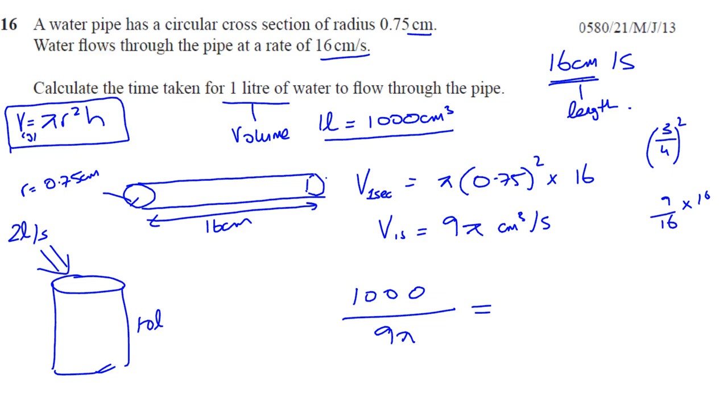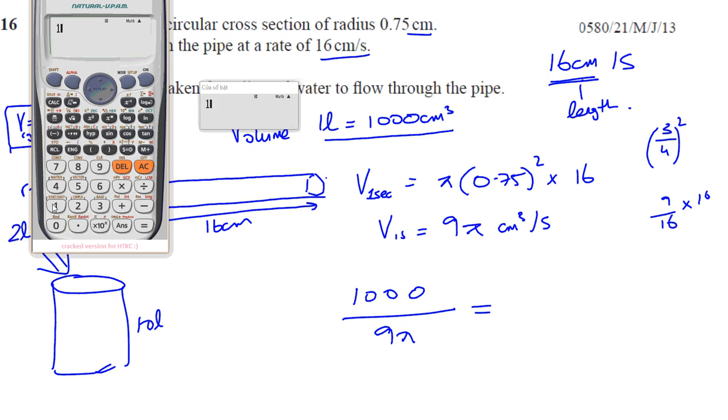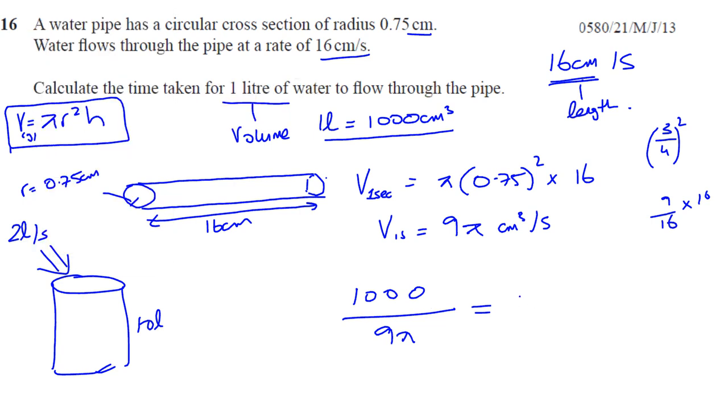So we do 1000 divided by 9π. Make sure that you type the right thing - always make sure you type the right thing in your calculator. So 1000 divided by 9π gives you 35.367. That is in seconds.